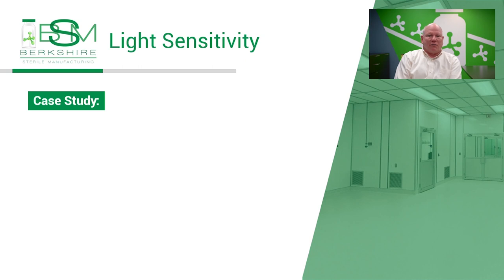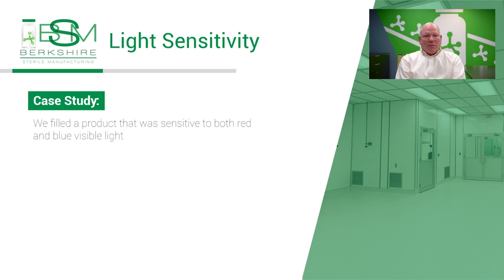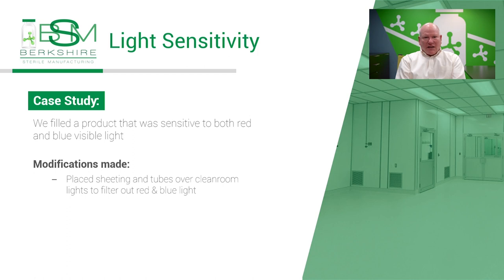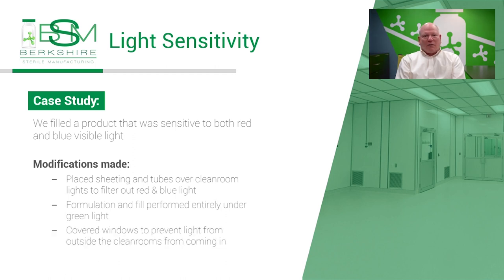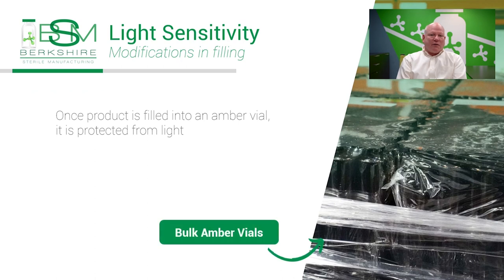For extremely light-sensitive products, we've changed the lights used in the formulation and filling rooms. For products sensitive to both red and blue light, we placed sheeting and tubes over our clean room lights to filter out the red and blue light, so the formulation and fill were performed entirely in green light. We have even covered the windows to prevent outside light from coming in. Once product is filled into its final container — typically amber glass for light-sensitive products — it's protected from light. The next step is visual inspection.